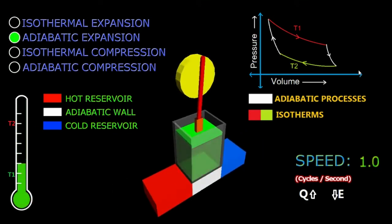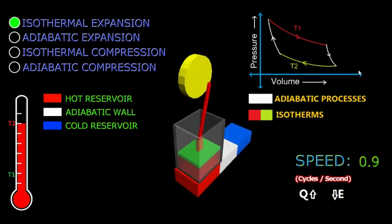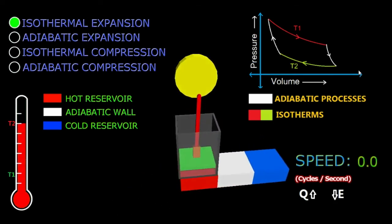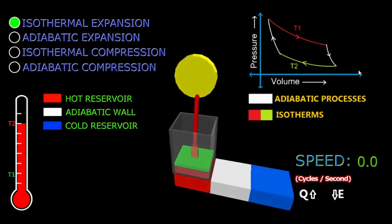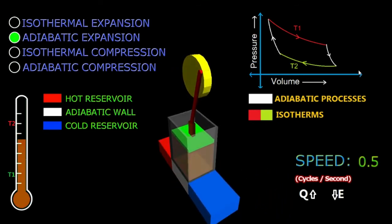You can increase the speed to a maximum value of one cycle per second, and you can decrease it all the way down to zero cycles per second. That means the system will stop and it will stop working. You can keep it slow or you can keep it fast.